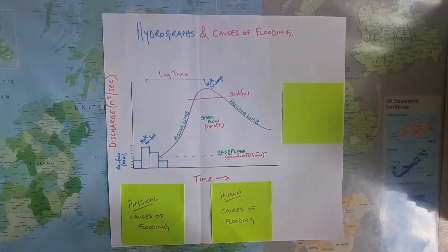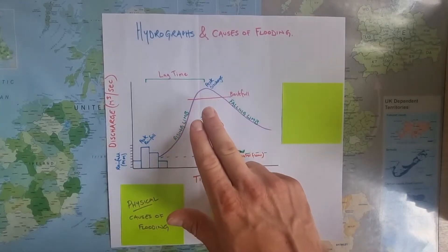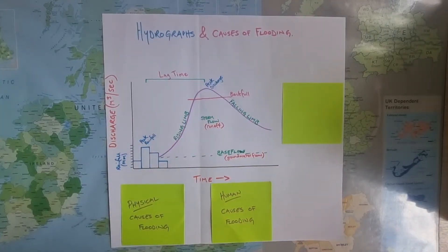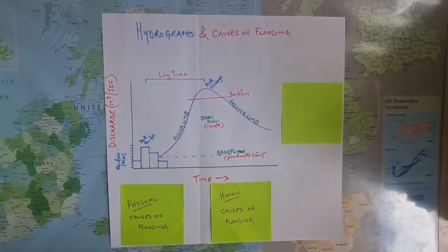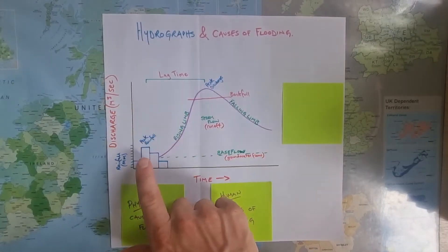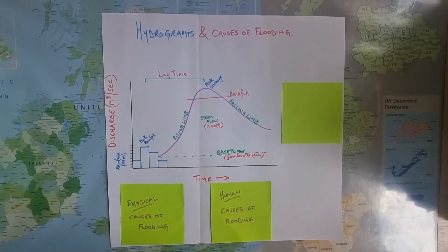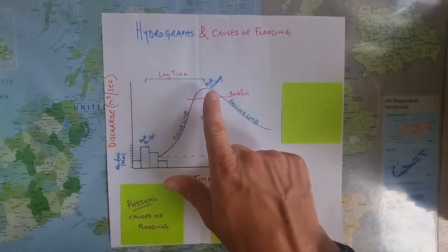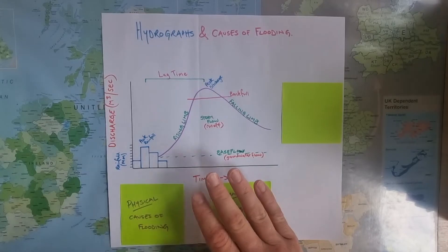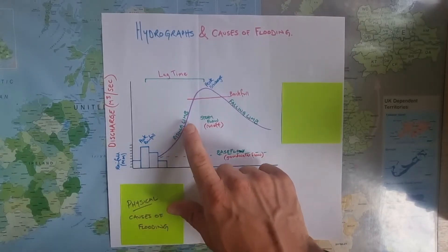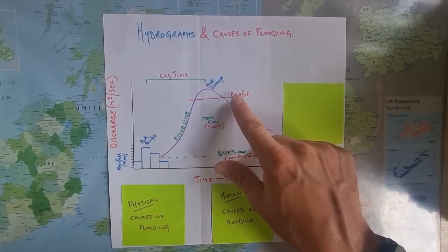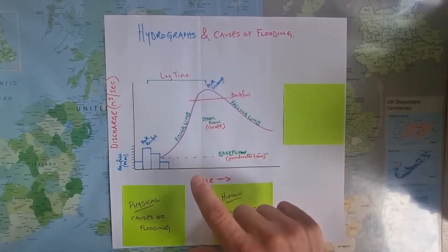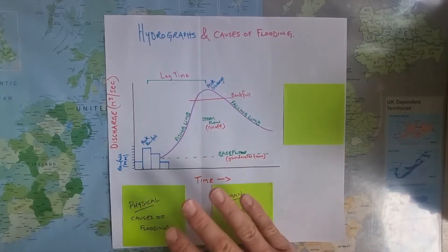The time delay between the peak rainfall and the peak discharge is called the lag time. Lag time will vary depending on a number of factors, and this is the reason why some places will flood much more readily, and others are very unlikely to flood. A lag time that is short between peak rainfall and peak discharge is what we call a flashy response of the river, creating flash floods — very quick floods after a storm. If we have a long lag time, then we have a slow or delayed response of the river. The rising limb will rise slowly, the peak discharge will be further over and likely not get as high, and the river is unlikely to flood.